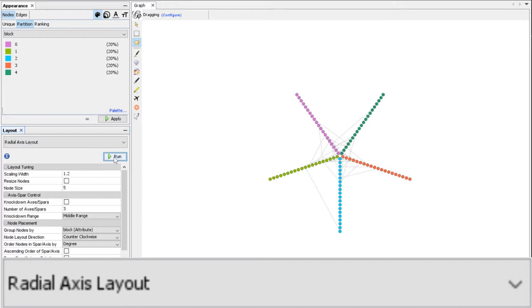The radial axis layout is similar to the circle layout except it stacks the nodes that have the same modality for a given attribute.